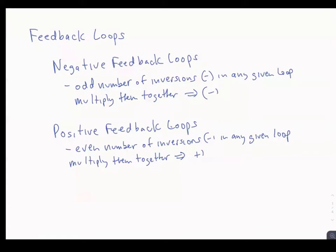Positive feedback is the opposite — an even number of inversions results in a positive value when multiplied together. If the furnace example were positive feedback, the air temperature going down would make the temperature go further down in a vicious cycle. Most feedback loops in the body are negative feedback and are stabilizing, though there are some important examples of positive feedback we'll discuss later.